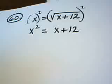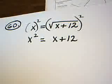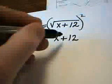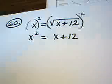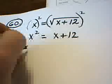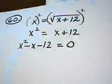At this point, I see that I have an equation whose degree is 2. It's a second degree or quadratic equation. So I'm going to put it in standard form by subtracting x and subtracting 12 from both sides. That gives me x² - x - 12 = 0.